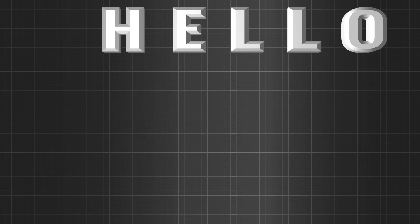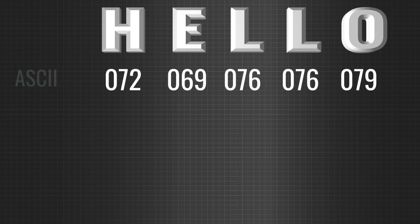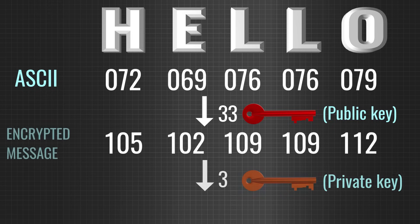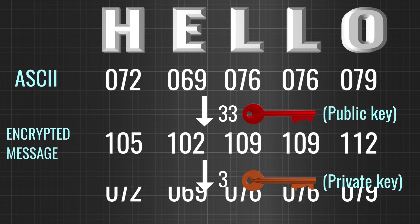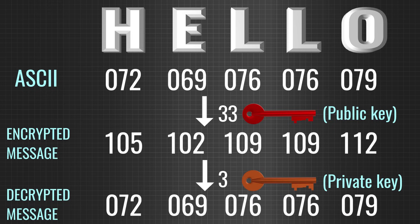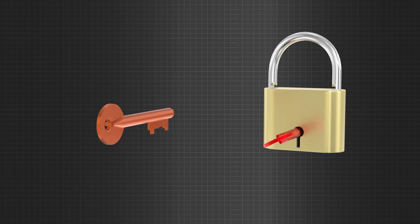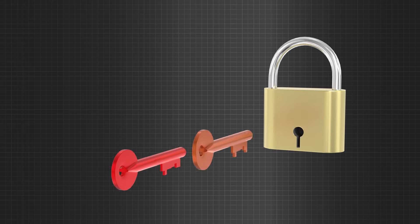In the digital world, we can build the same system. This hello message is encrypted with Alex's public key and sent. Only Alex's private key will be able to decrypt it back, and only Alex will be able to do that. Now let's examine one peculiar property of the new lock. We have already seen that a lock closed with a public key can be opened only with the corresponding private key.